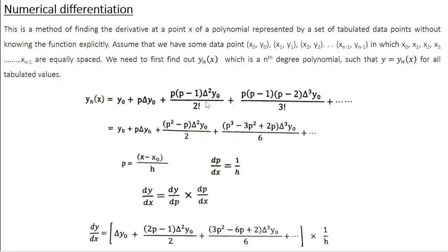Expanding all the products, this becomes y₀ plus p·Δy plus (p²−p)/2·Δ²y₀ plus (p³−3p²+2p)/6·Δ³y₀, all the way to the (n−1)th difference term. This is a polynomial and we need to differentiate it.